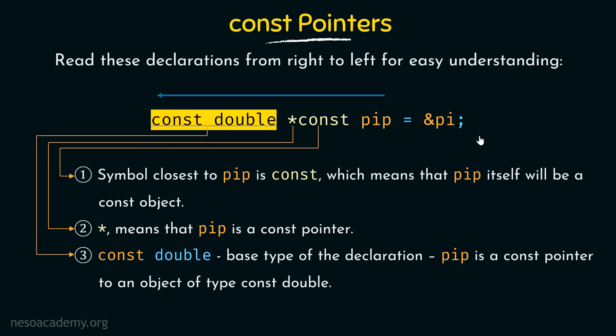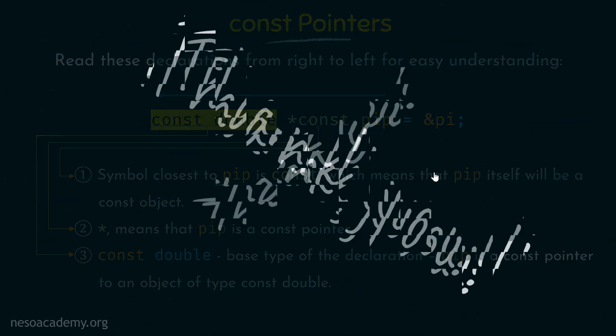With that, I hope you have understood the differences between normal pointers to constants and constant pointers. Remember that constant pointers are pointers that are of constant type themselves. I hope you have understood the topics we discussed about pointers to constants. Thank you for watching and see you in the next one.